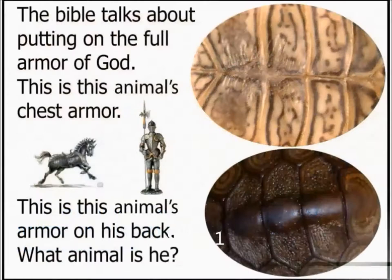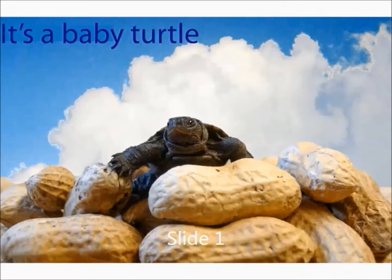The Bible talks about putting on the full armor of God. This is the animal's chest armor on top, and this is the animal's armor on his back on the bottom. What animal is it? It's a baby turtle — this is his actual size compared to the peanuts he's crawling on. I found him when he must have just hatched in the park near my house.